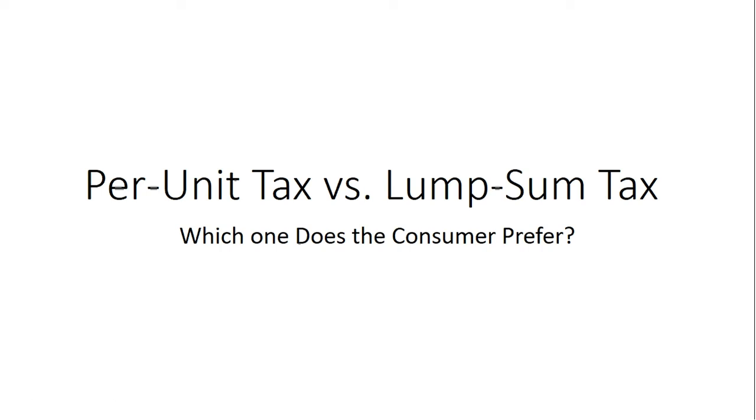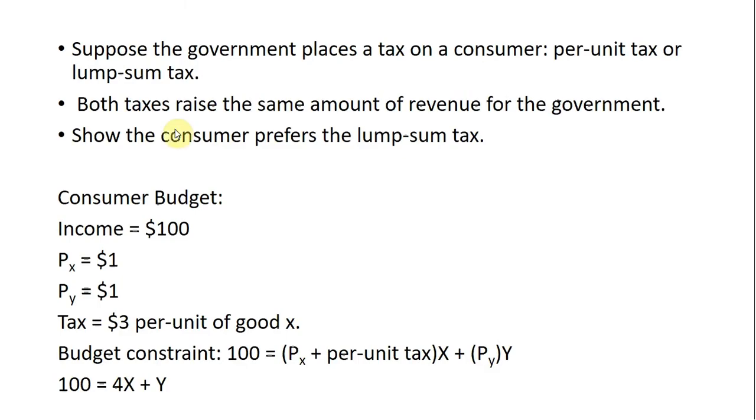In this video, we're going to look at a per-unit tax and then a lump-sum tax to see which one the consumer prefers. Suppose the government places a tax on a consumer. Again, this could be a per-unit tax or a lump-sum tax. We're going to assume that both taxes raise the same amount of revenue for the government. And we're going to show, despite that, that the consumer prefers the lump-sum tax.